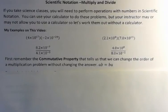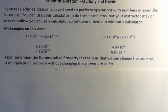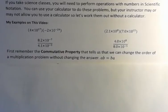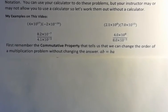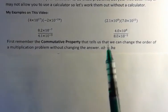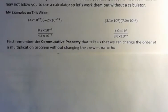First, remember the commutative property that tells us that if we change the order of a multiplication problem without changing the answer, and in general we say a times b is the same as b times a.